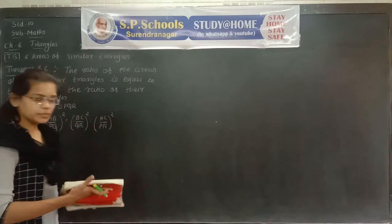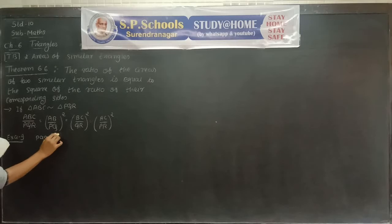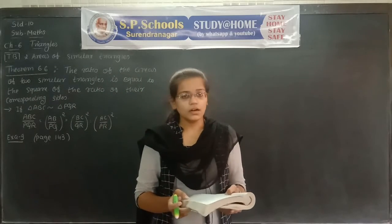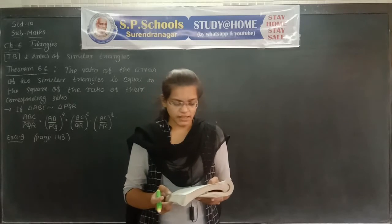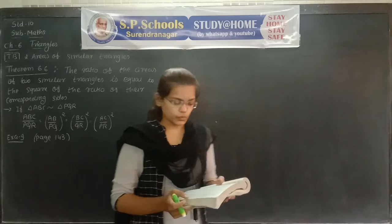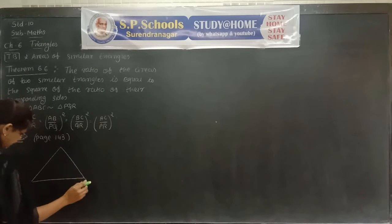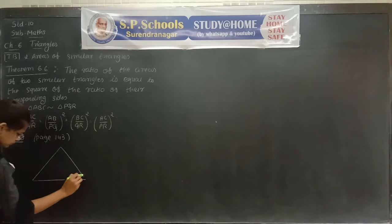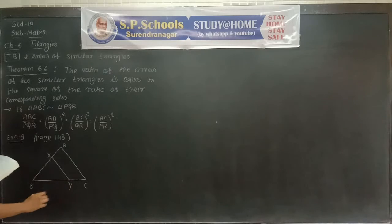Now we discuss Example 9 from the textbook on page number 143. See the question first — whenever you see an e-learning session, open your textbook first. In figure 6.43, line segment XY is parallel to side AC of triangle ABC and it divides the triangle into two parts of equal areas. Find the ratio AX upon AB. First, draw the figure given in the textbook: triangle ABC with XY parallel to AC.